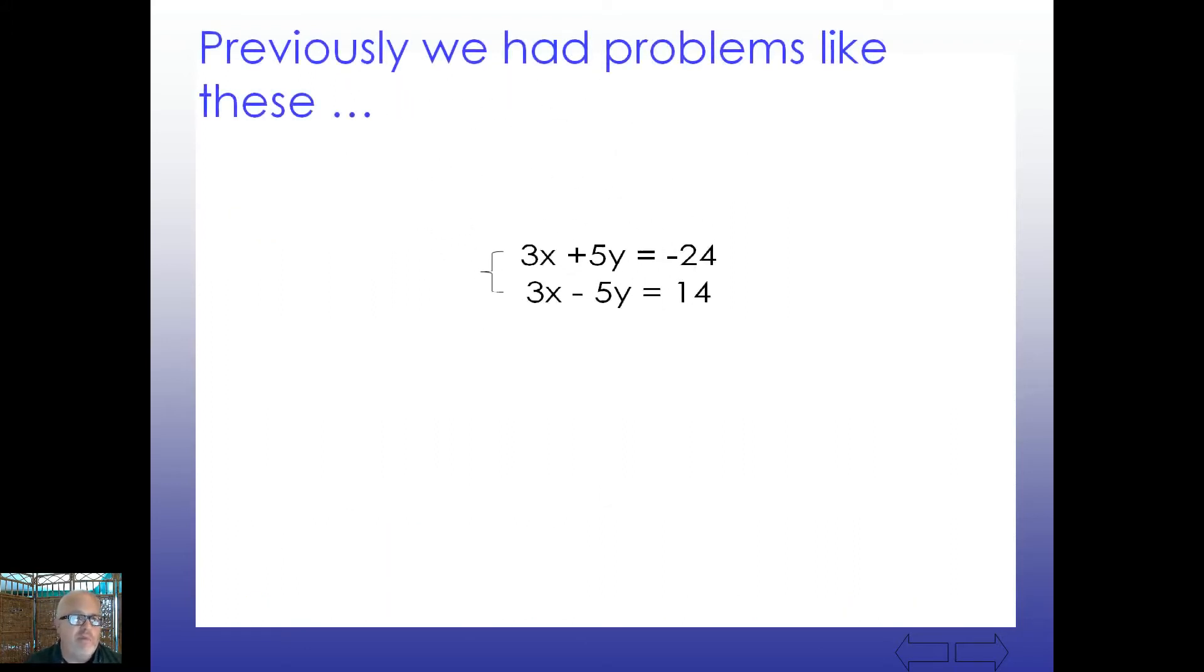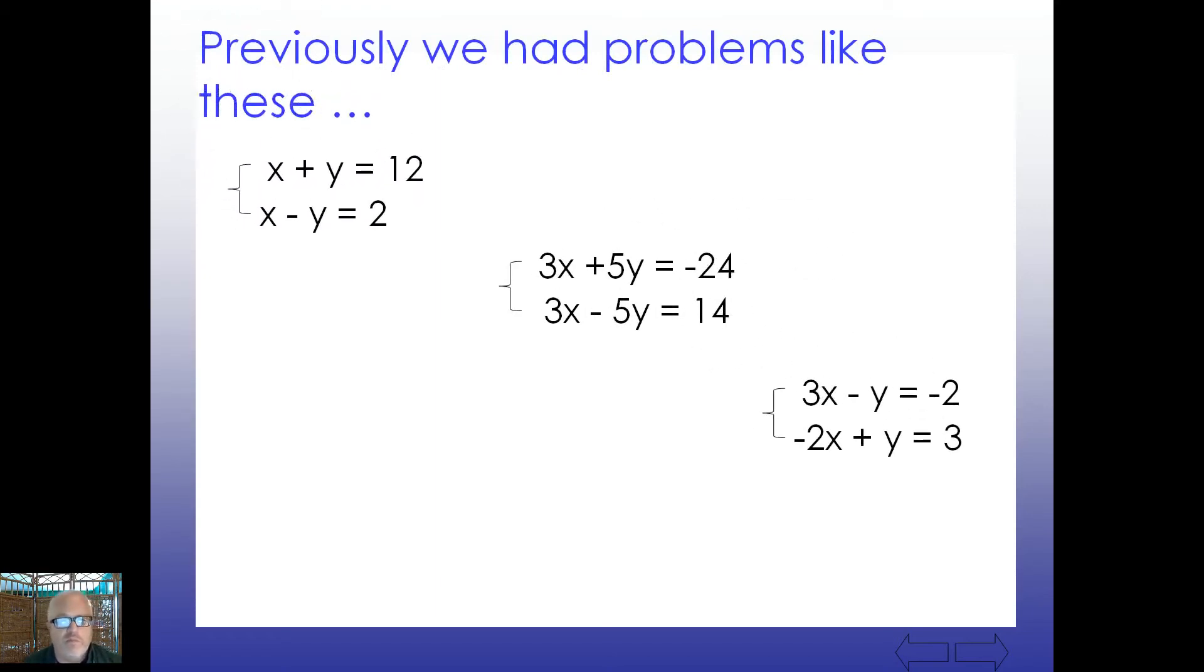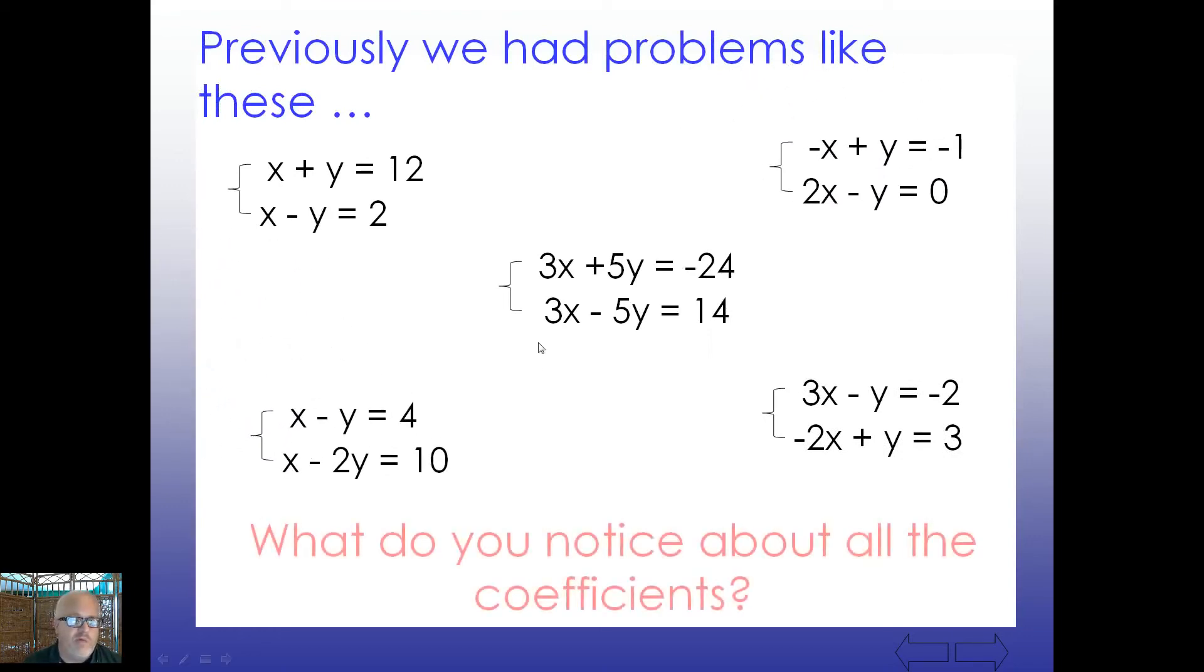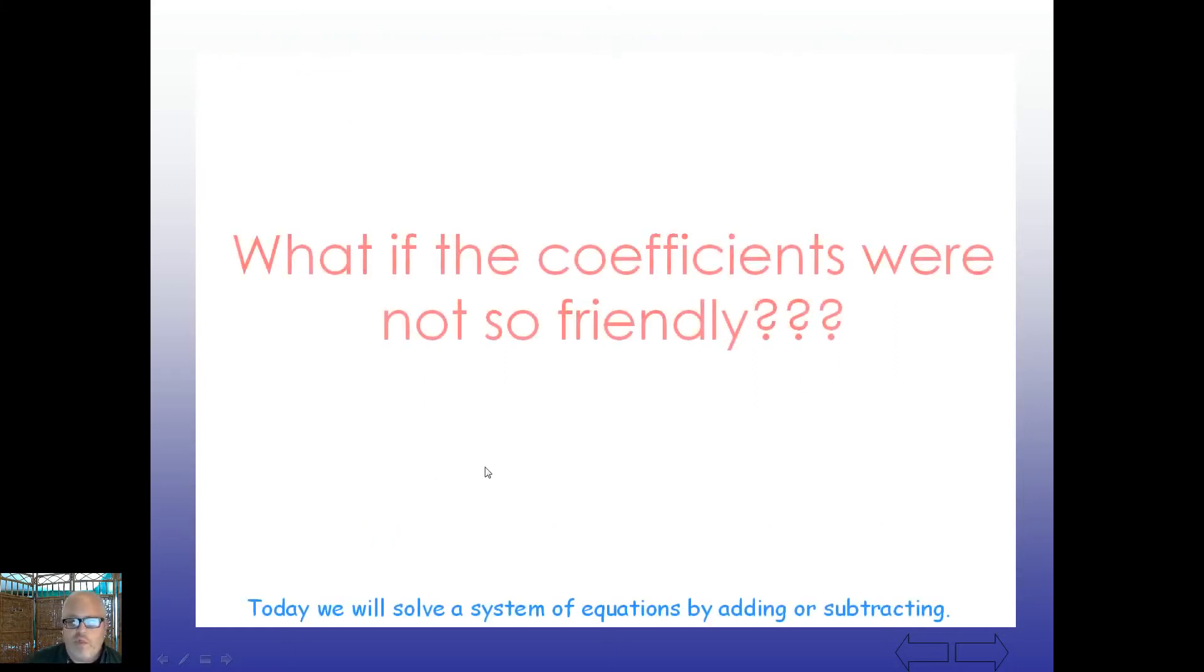And previously we've had problems like these. So take a look at the following here. You have these systems. And notice how they're all lined up nicely. X is over X's, Y's over Y's, constant over constants. And what do you notice about all these coefficients? Looks like 1 and negative 1. Looks like 1 and 1 here. 5 and negative 5. What do we got over here? 1 and negative 1 again and again. So the question is, what if these coefficients are not so friendly? What if they aren't just coincidentally opposites of each other?